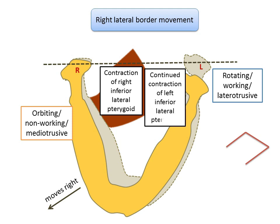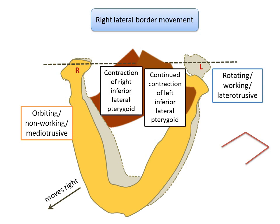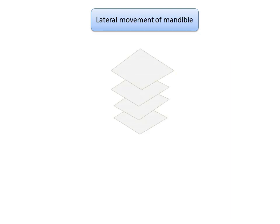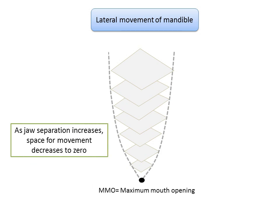With the mandible in the right lateral border position, contraction of the right inferior lateral pterygoid along with continued contraction of the left inferior lateral pterygoid causes the right condyle to move anteriorly to the left, returning the mandible to its centric relation position. Lateral movements can be generated by varying levels of mandibular opening; with each increasing degree of opening, smaller tracings will result.